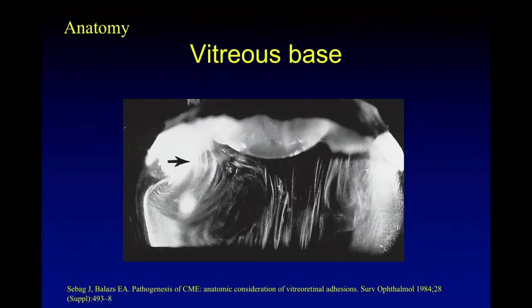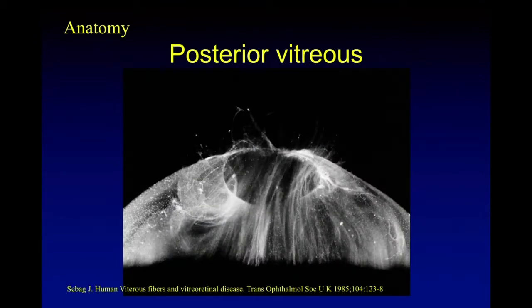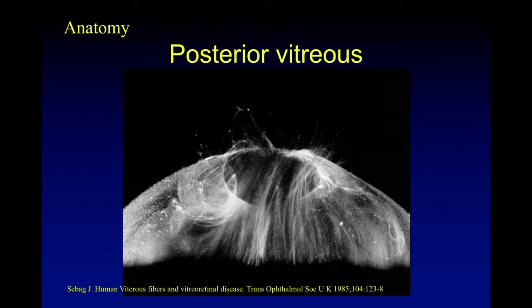The most significant and most adherent part of the vitreous is attached to the vitreous base. There are lots of fibers in the vitreous base, and the vitreous base straddles the ora serrata — about one to two millimeters anterior and one to two millimeters posterior to the ora serrata, as that arrow shows. When we look at the posterior vitreous, there are structures there. To the left is a hole where the attachment to the disc is, and that central roundish, ovalish structure is the attachment to the macular area. In the posterior pole, the most significant attachment is to the disc, then to the fovea and vessels.